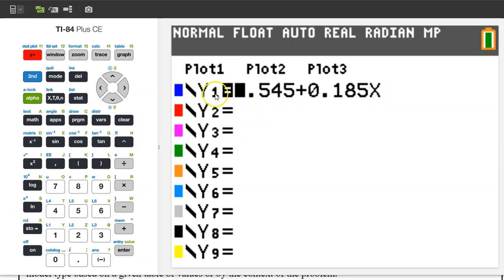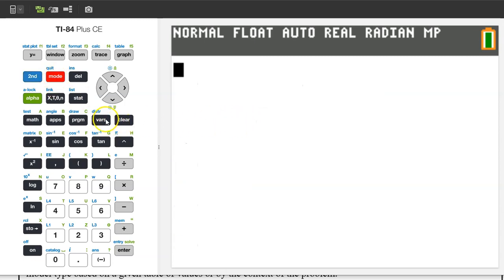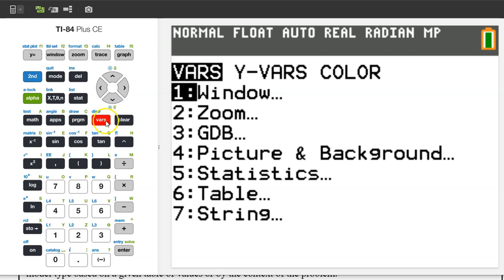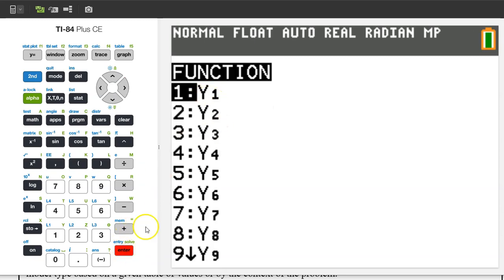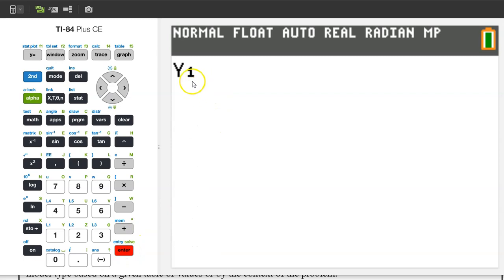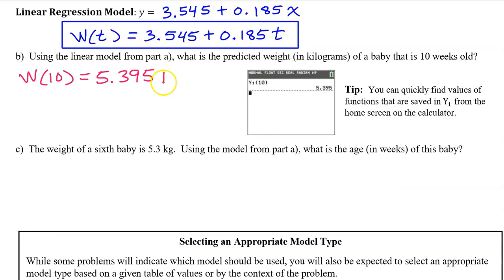So to find w at 10, we really need to find y1 at 10. We can do that on the calculator from a blank screen. So second, quit. To get y1, hit the vars button, which stands for variables. Switch over to yvars and hit enter for function. And then hit enter for y1. That brings y1 to the screen. To evaluate y1 at 10, just put a 10 next to it in parentheses. So this is y1 at 10, which is also w at 10. Just don't forget the units.